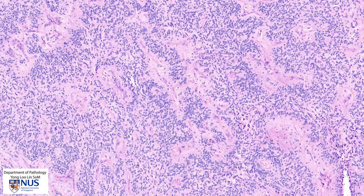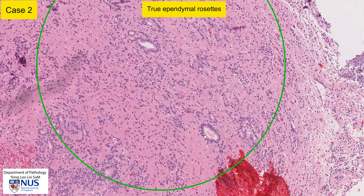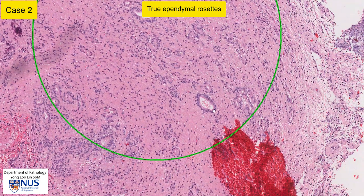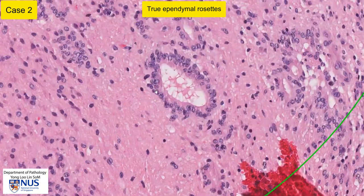This is different from true ependymal rosettes, which may also be seen in ependymomas. Here is an example from a different case — a cerebellopontine angle tumor, also an ependymoma — where the rosette structures are a little bit different. They are almost resembling true glands with a very sharp luminal surface and a proper lumen, as opposed to perivascular pseudorosettes where you have a blood vessel in the center.